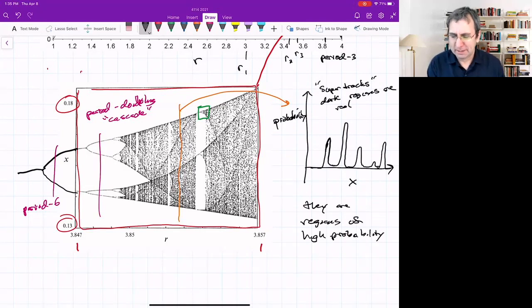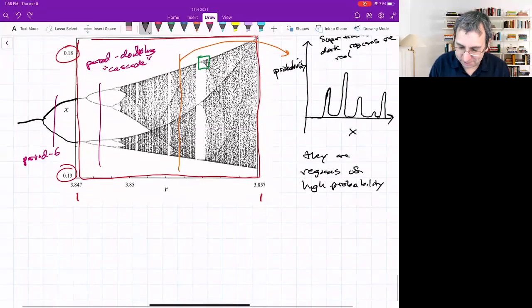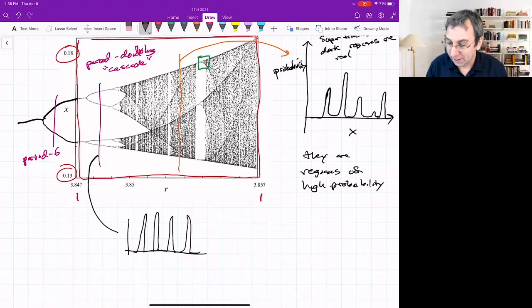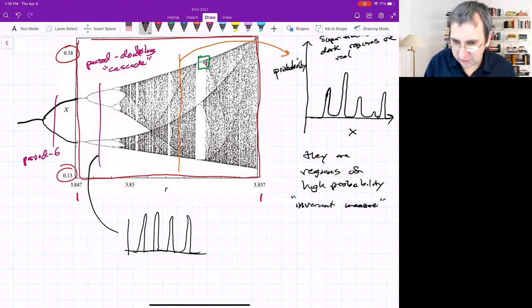The super tracks, the dark regions of a bunch of points are real and they are regions of high probability. Because you might say, what if instead of throwing out the first thousand points, if I threw out the first 10,000, would those things go away? No, because points will just keep visiting these high probability regions over and over again. And the probability, if you looked at a curve like this, the probability at a place where it's just periodic, you basically have delta functions of equal height. So yeah, those are real. They have something to do with if you look up the term invariant measure, it's kind of related to probability.